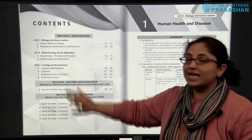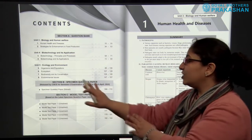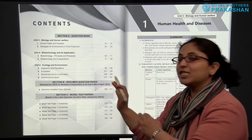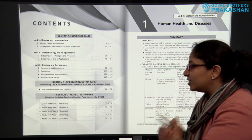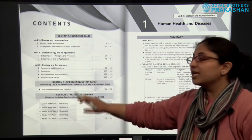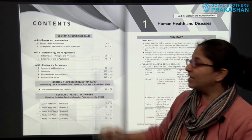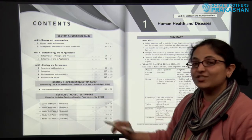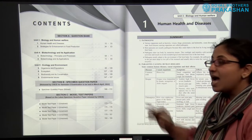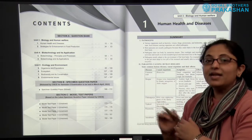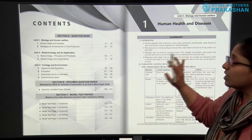After that we have the table of contents. There are three different sections: Section A, which is the question bank; Section B, which is the specimen question paper; and Section C, which is the model test papers. Let us go through each section individually and see how they have been designed.